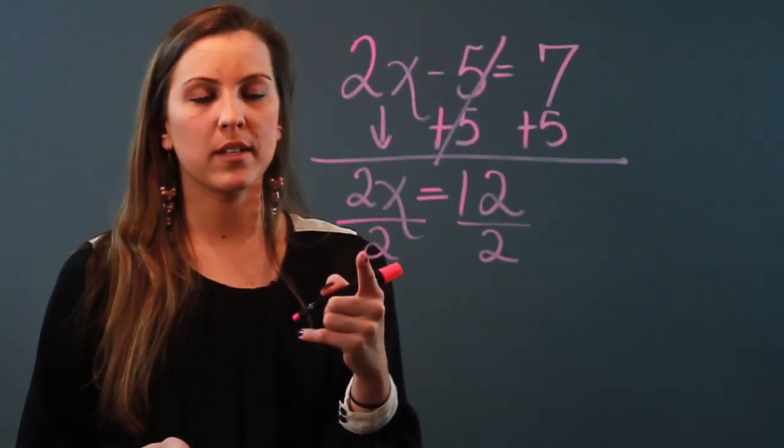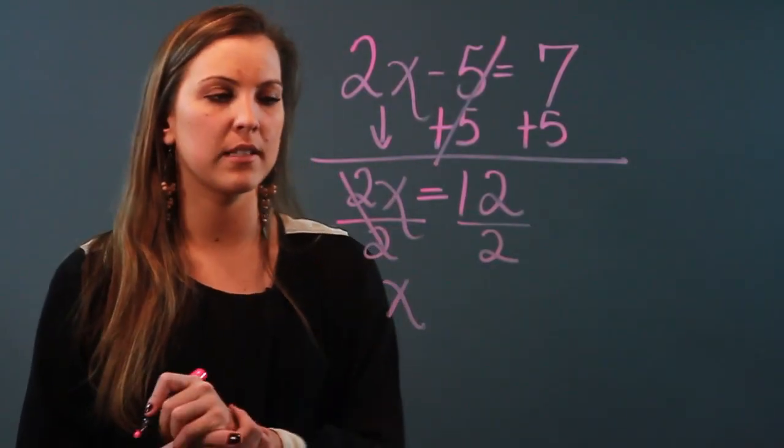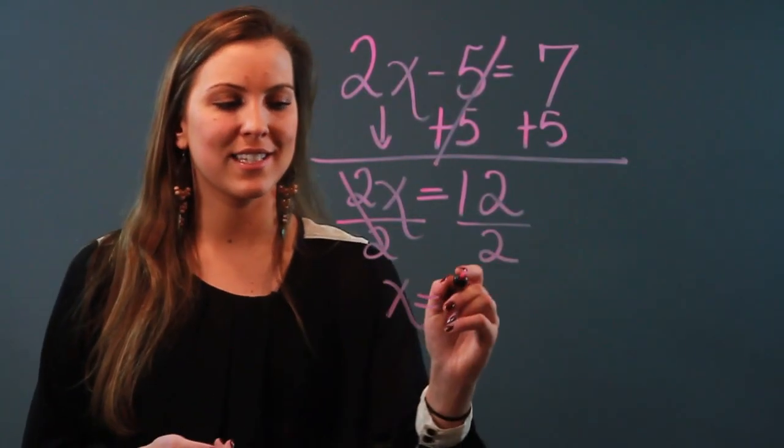what's going to happen is 2 divided by 2 is 1, but 1 times x is just x. So I'm just going to write down x equals 12 divided by 2 is 6.